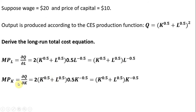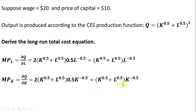The marginal product of capital follows a very similar partial derivative. Bring the 2 down in front; 2 minus 1 leaves what's in parentheses raised to the power of 1. Looking inside parentheses and taking the partial derivative with respect to capital, we bring the 0.5 down in front of K, and 0.5 minus 1 leaves K raised to the minus 0.5 power. Noting that 2 times 0.5 is just 1, here is the marginal product of capital.